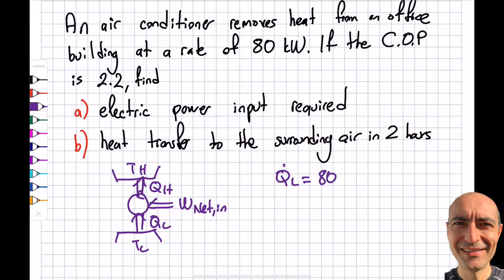What is given to me is in power. Let's double-check: is this Q_L or Q_H? This is the low temperature one. I'm removing heat from inside the room, so Q_L is given as 80 kilowatts. Is this a heat pump or refrigerator? It's a refrigerator. The coefficient of performance for a refrigerator is Q_dot_L divided by W_dot_net_in. This is my output; this is the input I have to pay for.